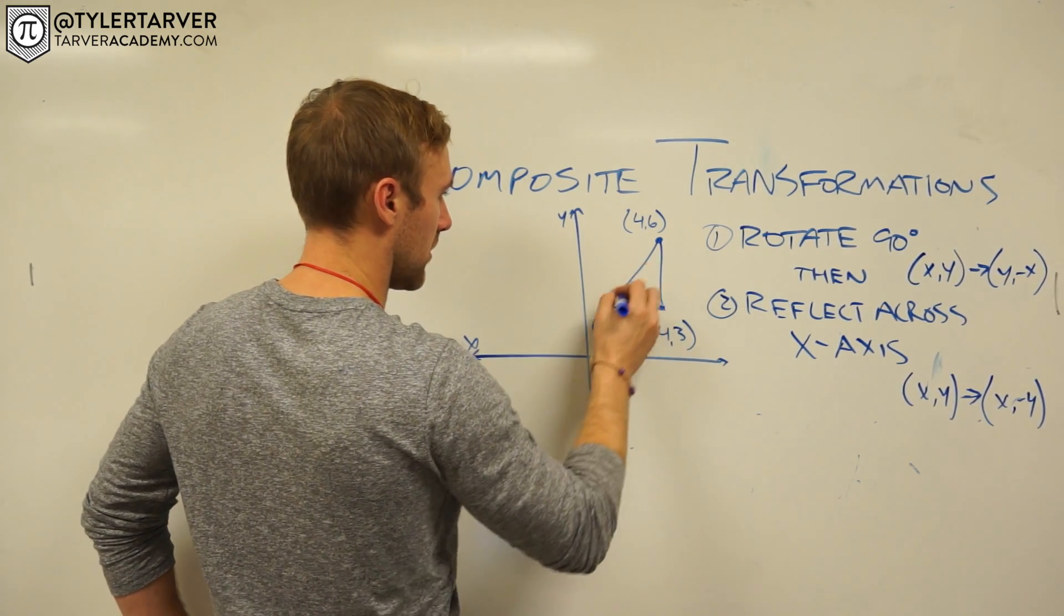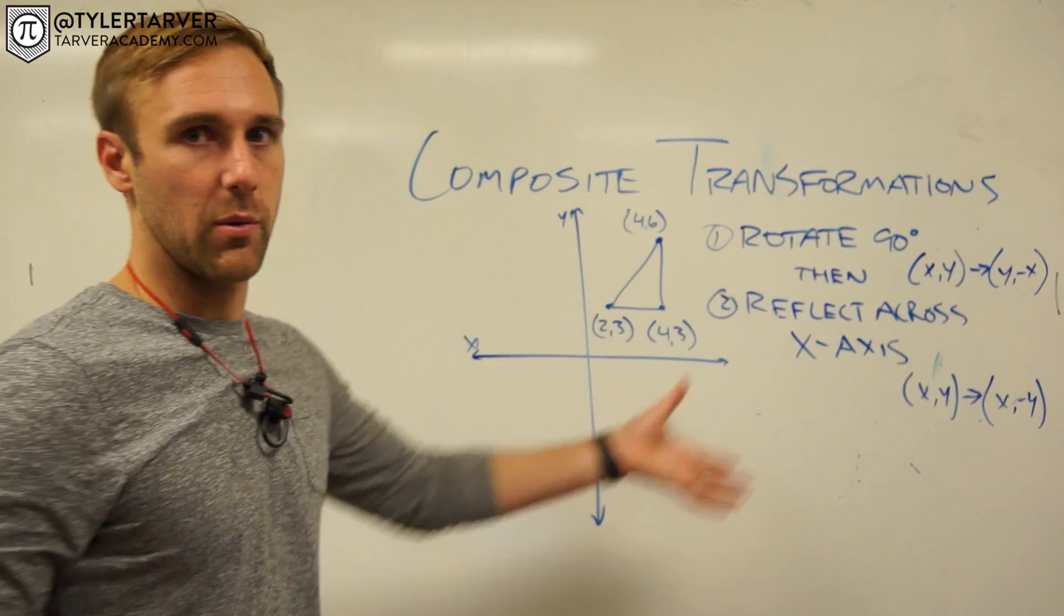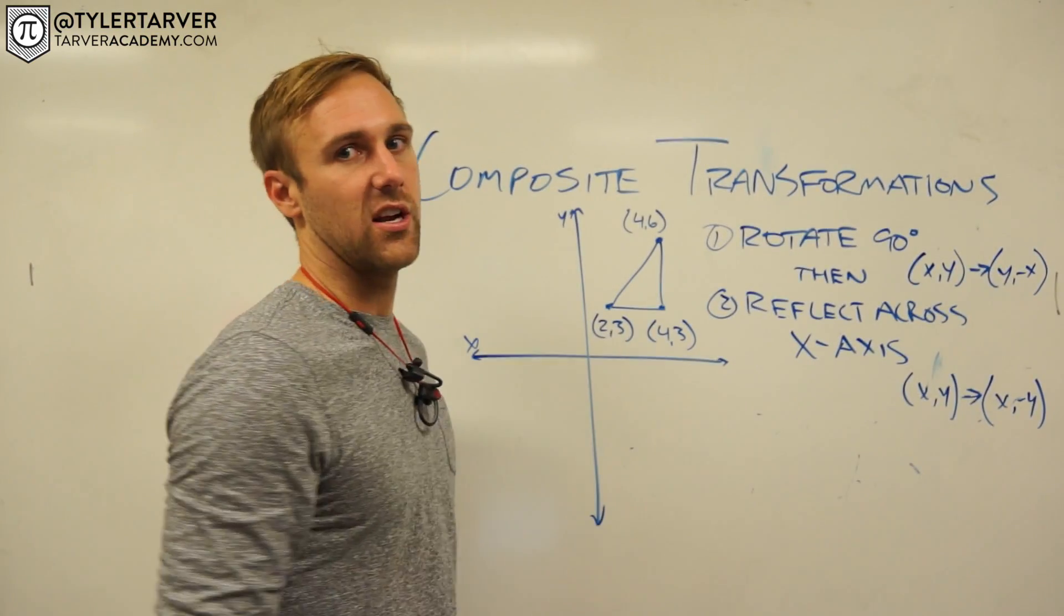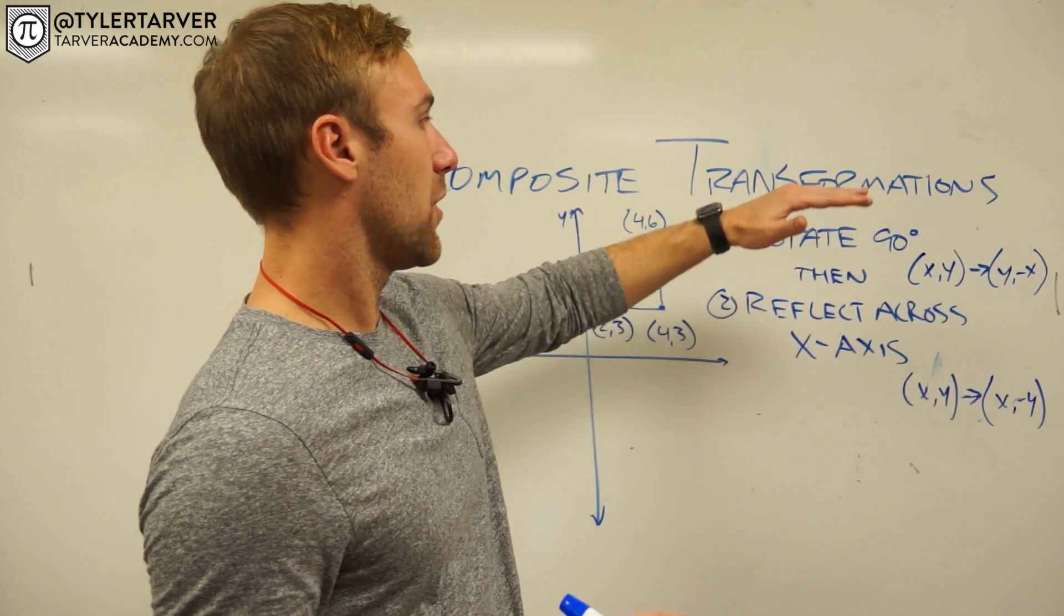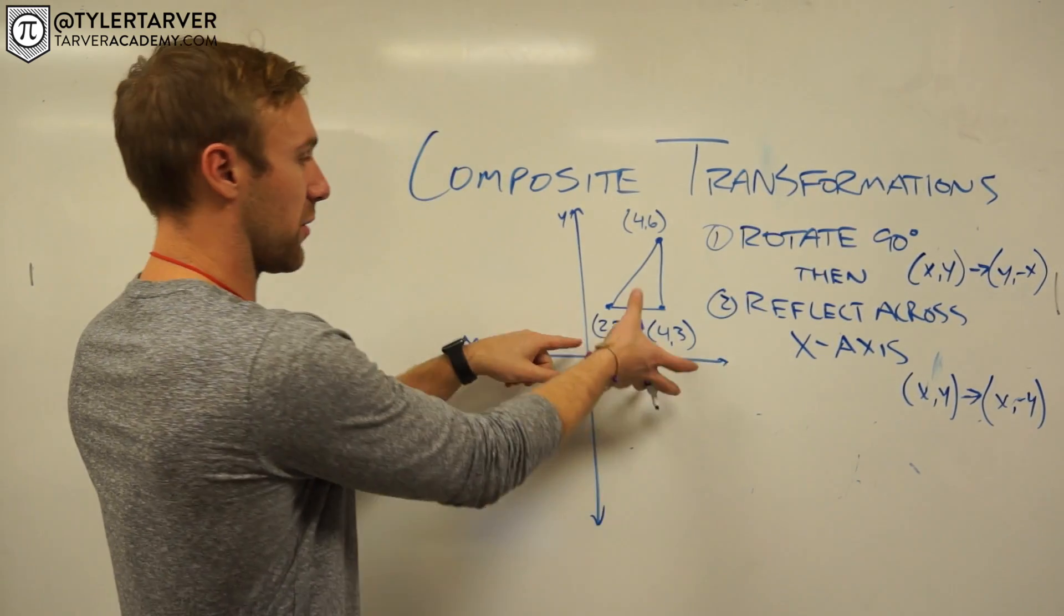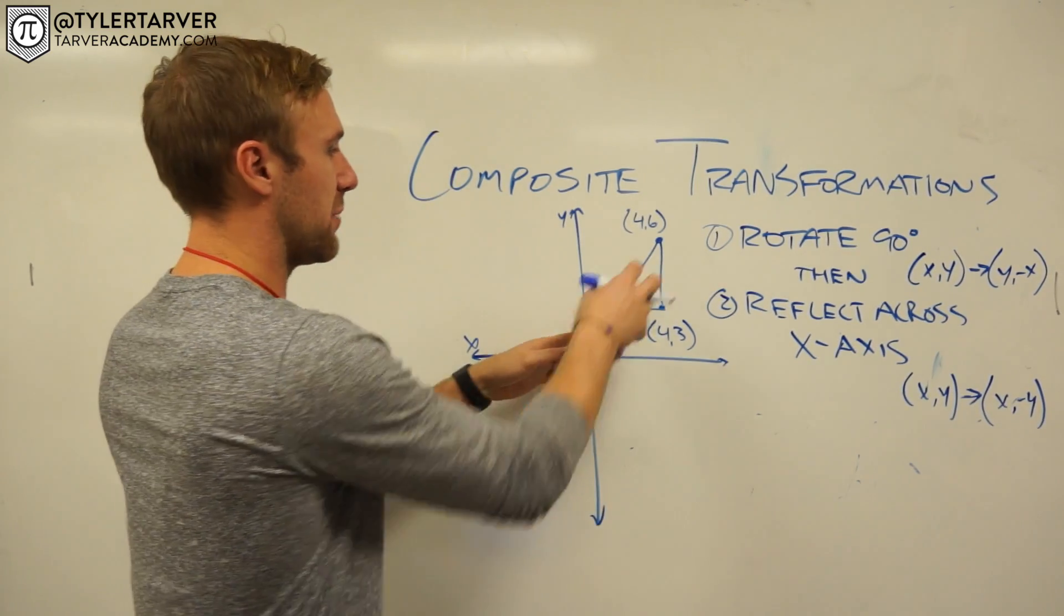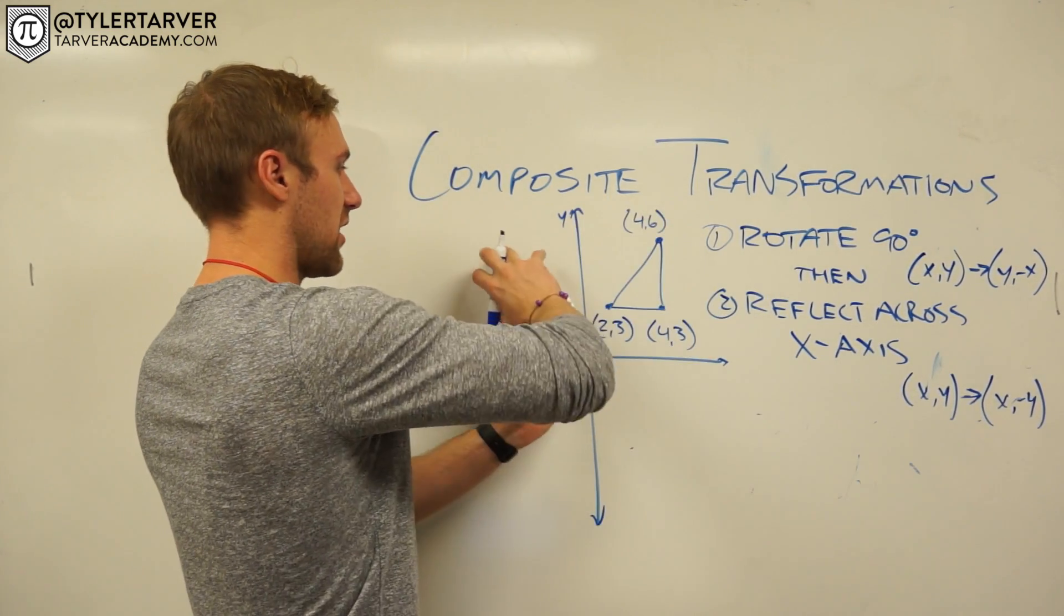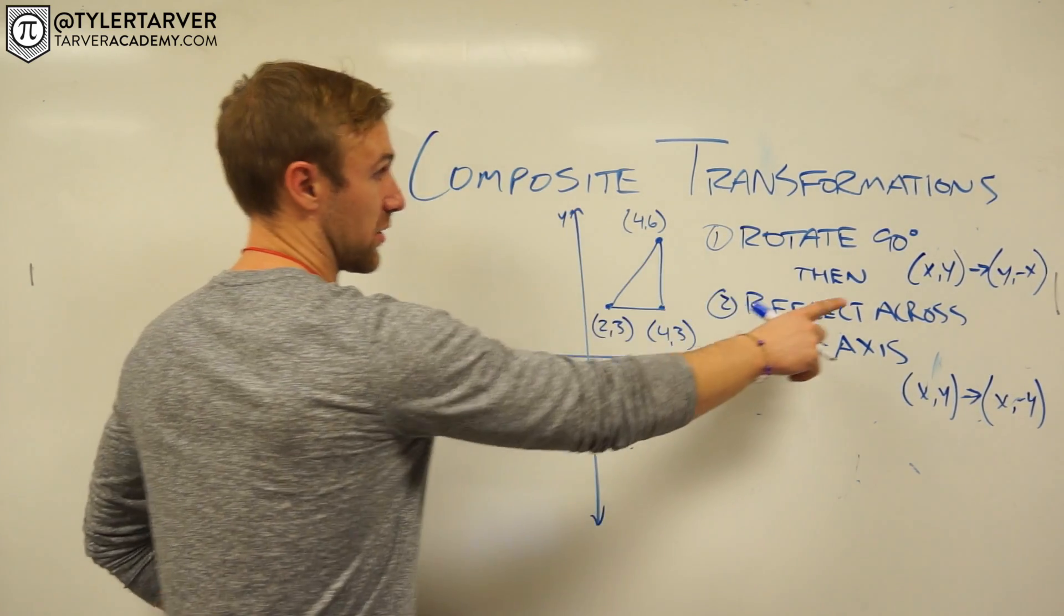Okay, so boom, boom, boom. Be better if I had like a dry erase board with like lines on it and I'll make this so much prettier. Okay, so we want to first rotate it around the origin. So we know we're going to rotate it here to here.